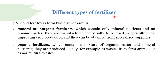There are two distinct groups of pond fertilizers: mineral or inorganic fertilizers, and organic fertilizers. Inorganic fertilizers contain only mineral nutrients and no organic matter; they are manufactured industrially for agriculture and obtained from specialized suppliers. Organic fertilizers contain a mixture of organic matter and mineral nutrients, and are produced locally, for example as wastes from farm animals or agricultural waste.